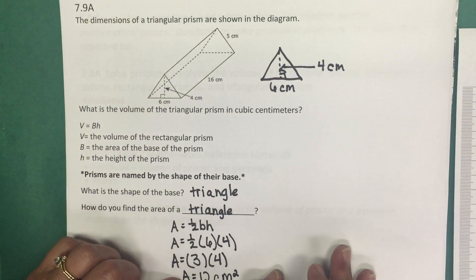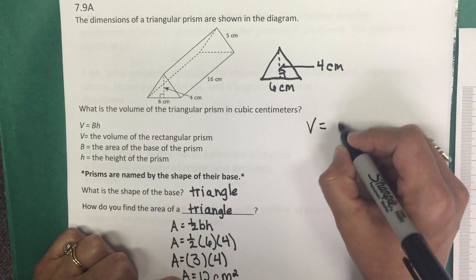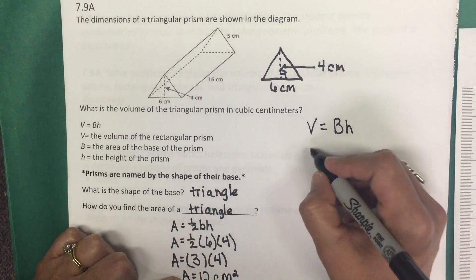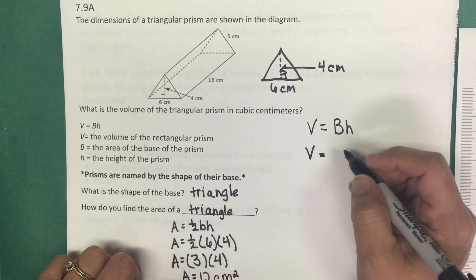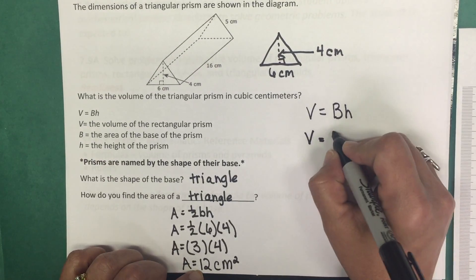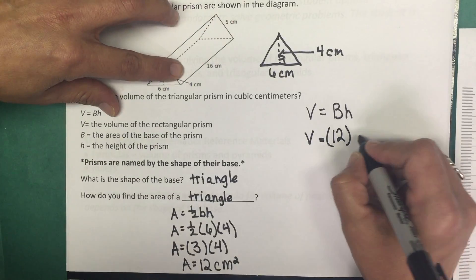So now we know what the area of the base is. Let's go back to our formula for volume, which is V equals area of the base times the height of the prism. So V or volume equals our area of the base, which is 12 centimeters squared, times the height of the prism, which is 16.